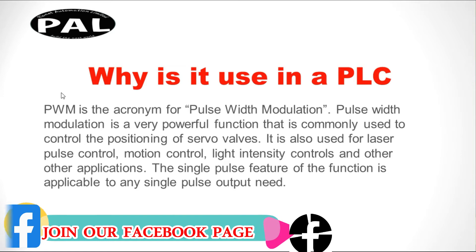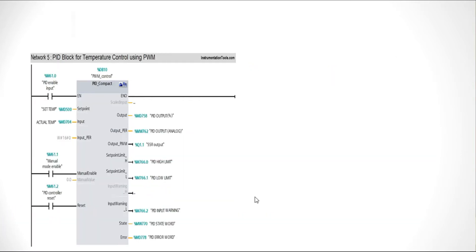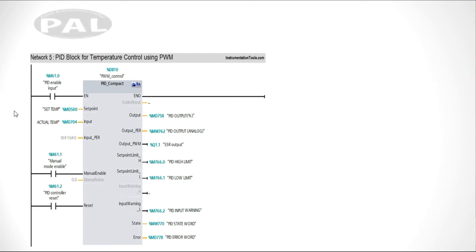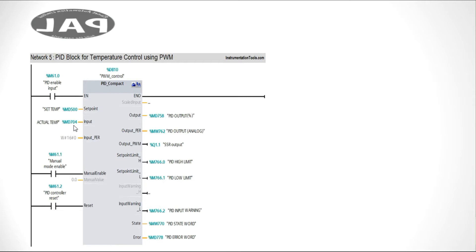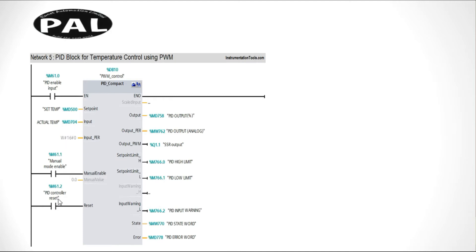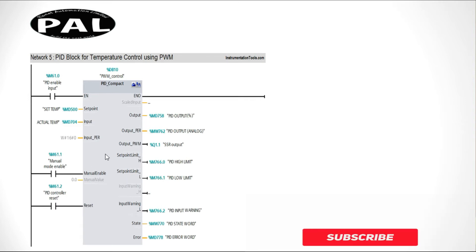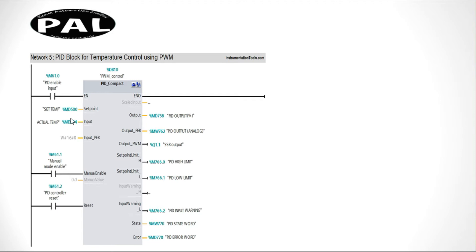PWM is very useful across many industry sectors. For example, in PLC-based temperature control, there is a 1200 PLC programming frequency, PID enable input, set temperature, memory data register, and actual temperature. The set temperature and actual temperature are compared, which controls your output via PID control and reset. Pulse width modulation connects to PID compact. The output PWM is controlled by an analog input signal, such as from an RTD or thermocouple.